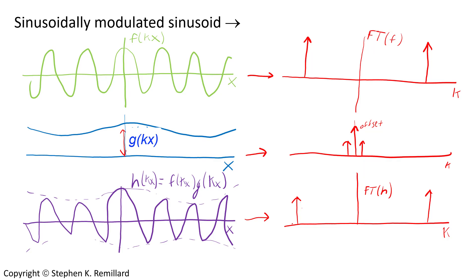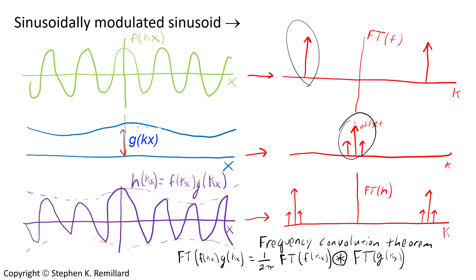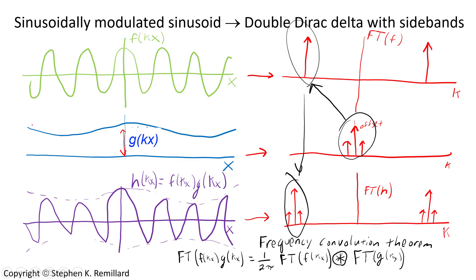Each one of these triplets will look just like the Fourier transform of g of x. This is in fact something called the frequency convolution theorem, which says that the Fourier transform of the product of two functions is the transform of the first function convolved with the Fourier transform of the second function, divided by 2 pi. Convoluting these two transforms is a matter of taking one of them and superimposing it onto the other. So the transform of a sinusoidally modulated sinusoid is a double Dirac delta function with side bands.